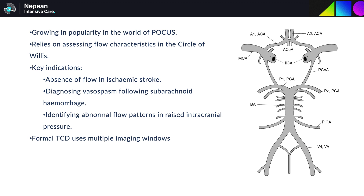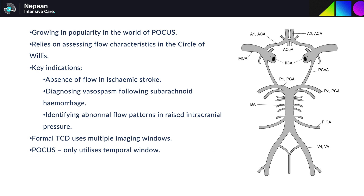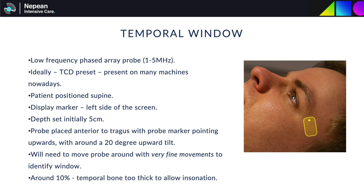Formal comprehensive TCD uses multiple imaging windows including the temporal, orbital, occipital, and submandibular windows to build a picture of the entire circle of Willis, but normally in POCUS we only tend to use the temporal window. For this you need a low frequency phased array probe — the same as when doing echo — using a TCD preset. Keep your patient supine or with the head slightly elevated, and your display marker should be on the left hand side, which is different from echo.